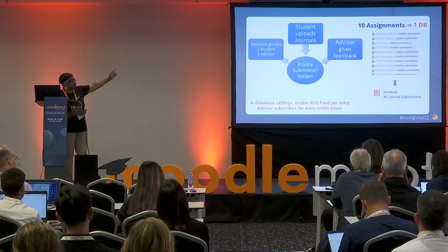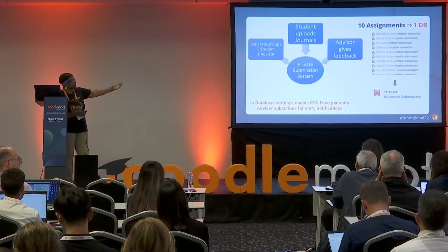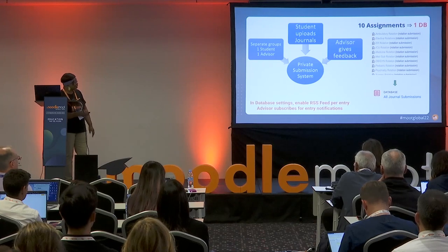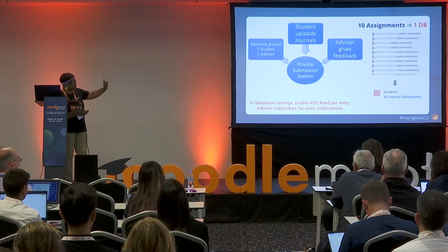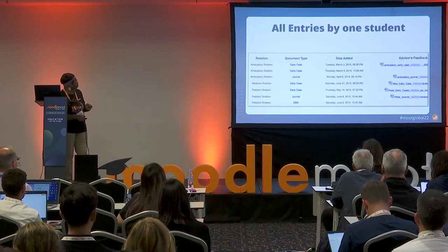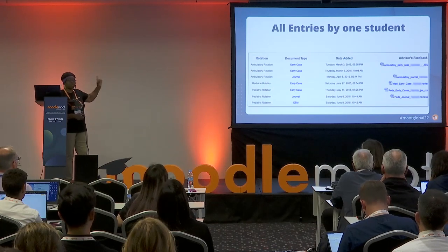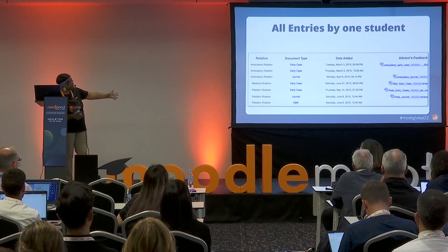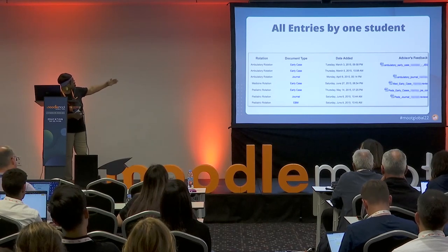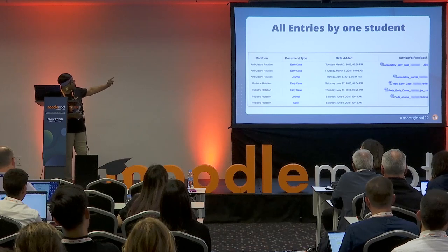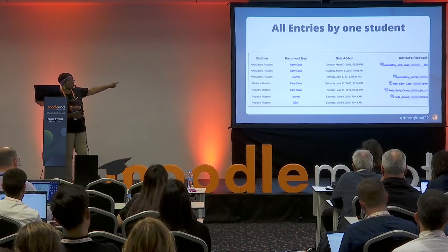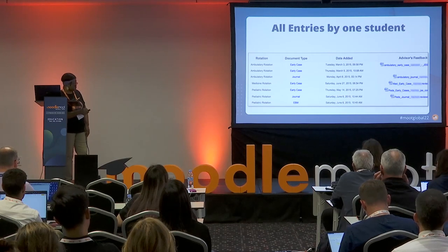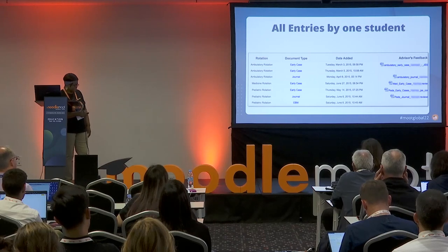The student uploads their information into the database and the advisor can see it and give feedback — consolidating ten links into one. Looking at entries by one student, you can sort by rotation and see, for example, three documents for ambulatory, one for medicine, one for pediatric. You can easily spot if a student is missing something — like one more document for medicine — and follow up. The student can also see for themselves what they're missing.